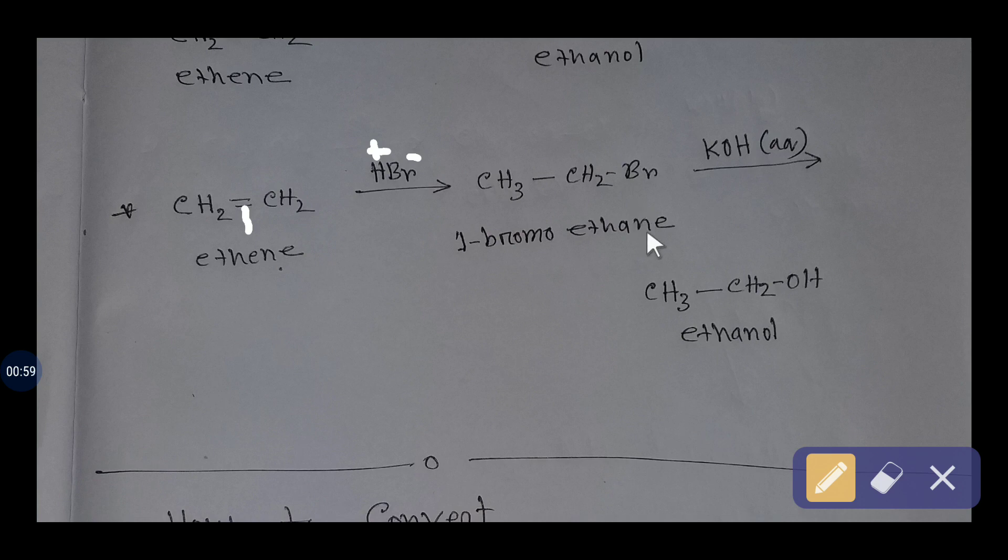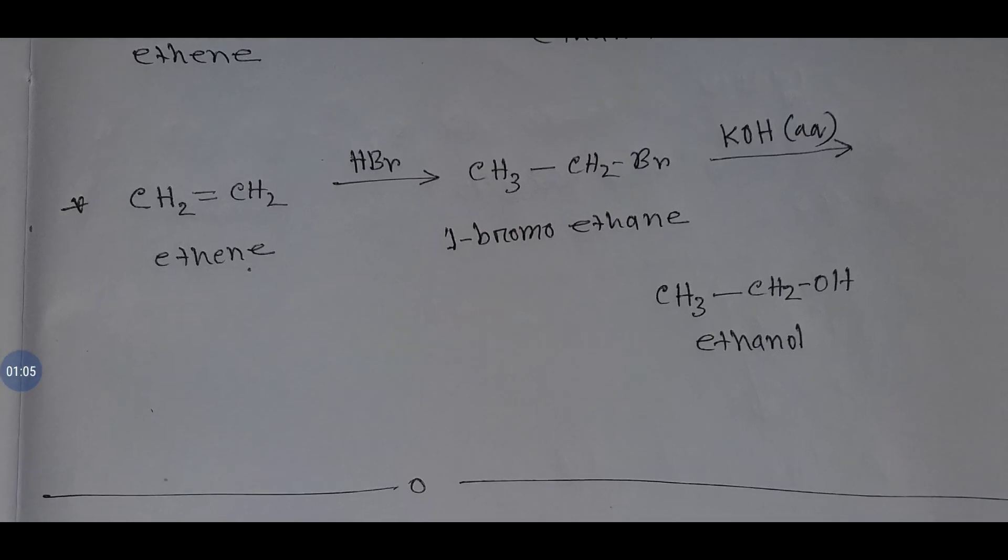If you add here aqueous potassium hydroxide, then this bromine of bromo ethane will be replaced by hydroxide ion of potassium hydroxide. So you will get alcohol, which is ethanol.